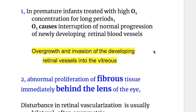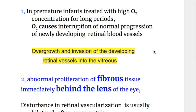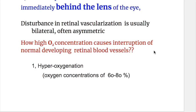In premature infants treated with high oxygen concentration for long periods, oxygen causes interruption of the normal progression of newly developing retinal vessels. There is overgrowth and invasion of the developing retinal vessels into the vitreous, and abnormal proliferation of fibrous tissue immediately behind the lens of the eye. The disturbance in retinal vascularization is usually bilateral but often asymmetric.